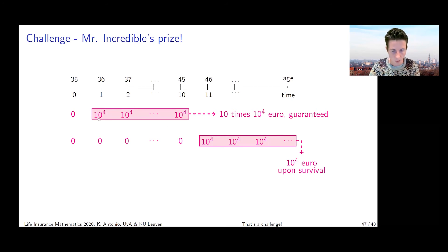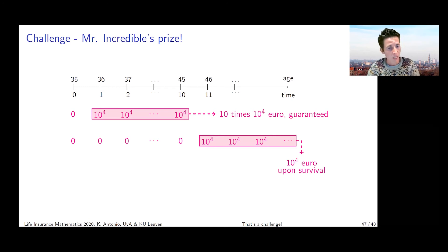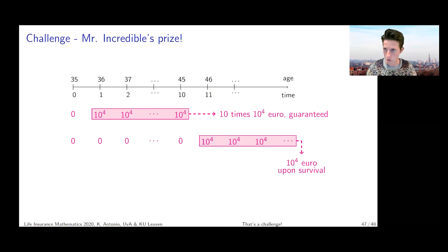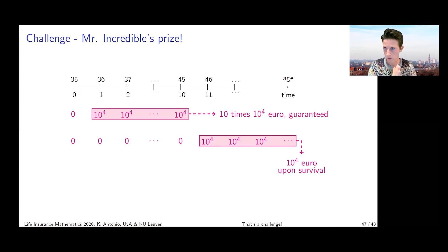To value the guaranteed payments at times 1 through 10, we don't need survival probabilities - those payments will be done regardless. After the first 10 payments, from payment 11 onward, there is still 10,000 euro payable at the end of the year, but now the payment becomes life-contingent - it will only be done if Mr. Incredible is alive at the end of that year. For those payments, we need to account for both financial discounting and survivorship.